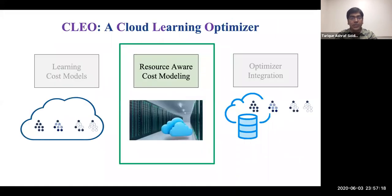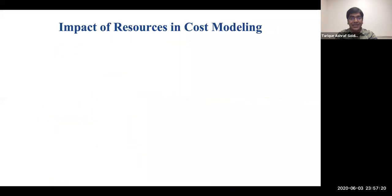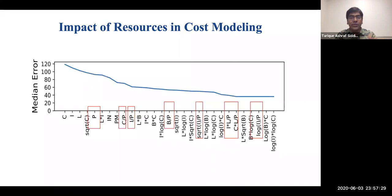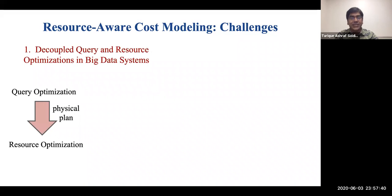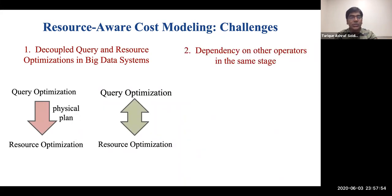Next, we look at the resource awareness aspect of Clio. In massively parallel systems such as Scope, cost depends heavily on resources such as the number of machines allocated to each operator. As depicted in this figure, many features involving the number of machines, denoted by the symbol P, lead to a sharp drop in error. However, there are two major challenges in using resources for cost modeling. First, in big data systems, query and resource optimizations are performed separately. During query optimization, resources are often assumed to be some fixed constant and are optimized later. But what we need here is a joint optimization of query plans and resources so that we can find resources that lead to optimal cost.